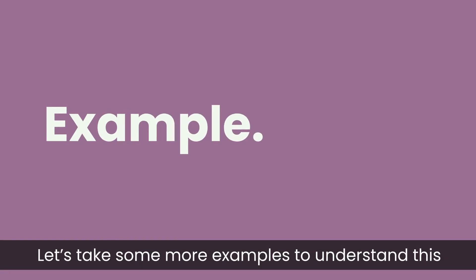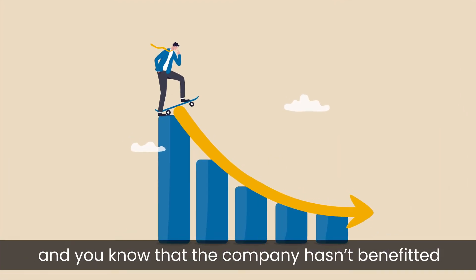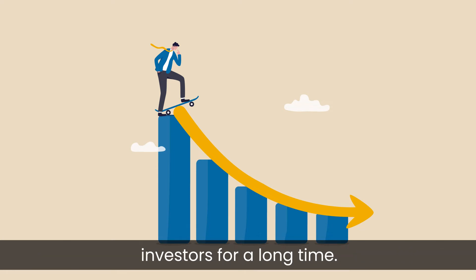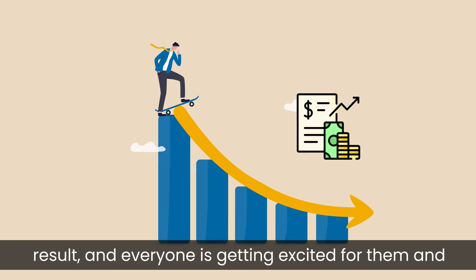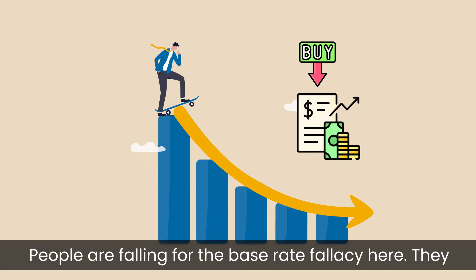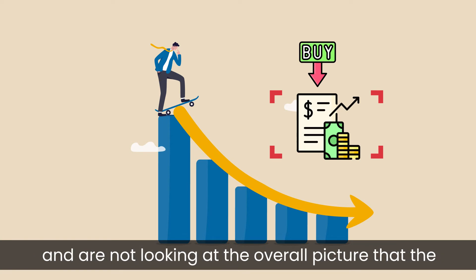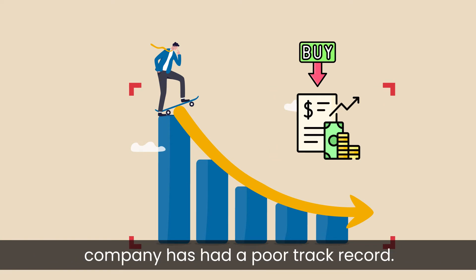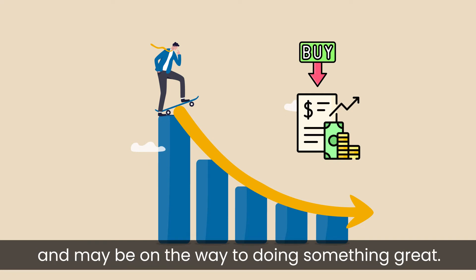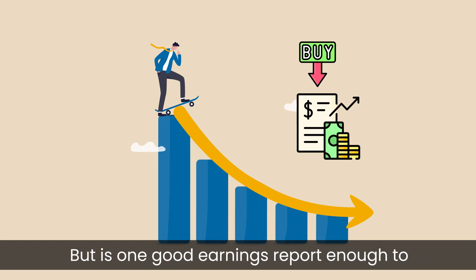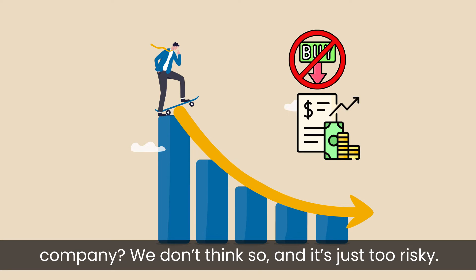Let's take some more examples to understand this concept better. Suppose there is a company with a poor track record and you know that the company hasn't benefited investors for a long time. Now suddenly the company releases an amazing result and everyone is getting excited and buying the stock. People are falling for the base rate fallacy here — they are giving more importance to current information and are not looking at the overall picture. Yes, the company may have a turnaround from here, but is one good earnings report enough to completely change sentiment towards this company? We don't think so, and it's just too risky.